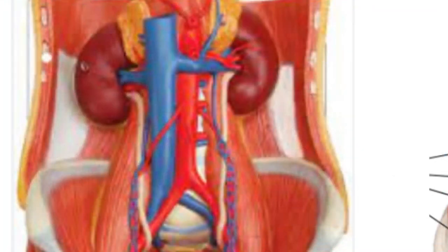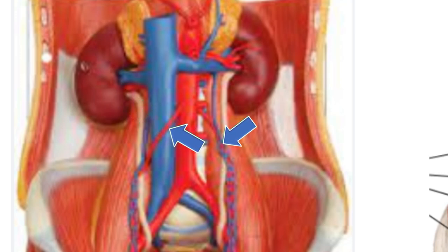The inferior vena cava runs parallel to the aorta on its right-hand side. Because the inferior vena cava is in the way, the right renal artery has to pass behind it to get to the right kidney. The gonadal arteries — testicular in men and ovarian in women — are situated surprisingly high up in the abdomen because during early fetal life the gonads begin to develop alongside the kidney before migrating downwards to their proper positions.